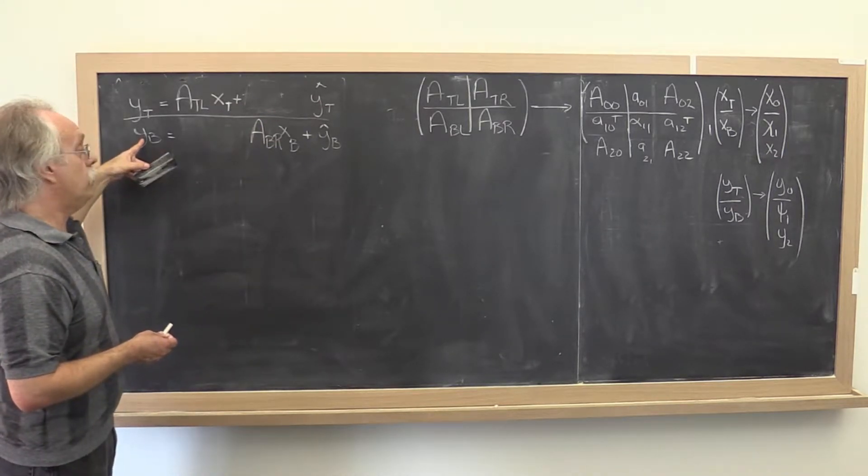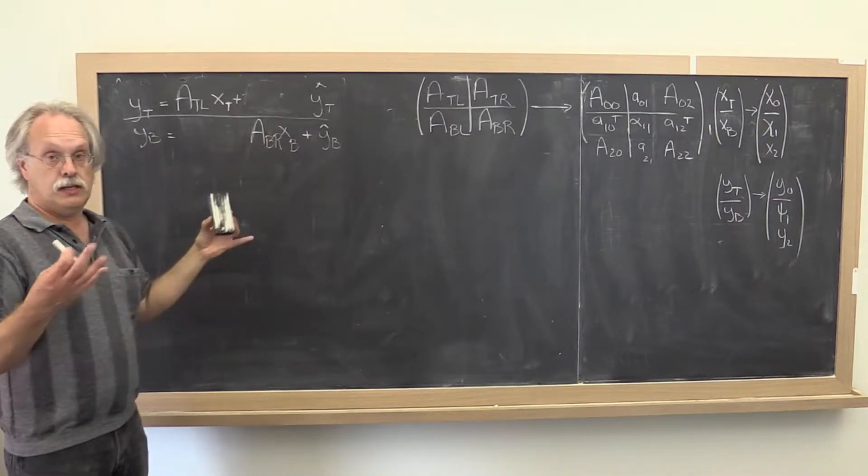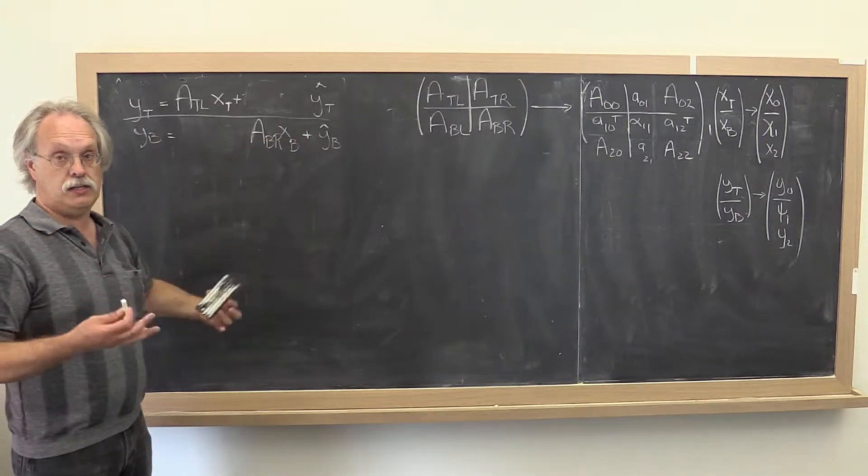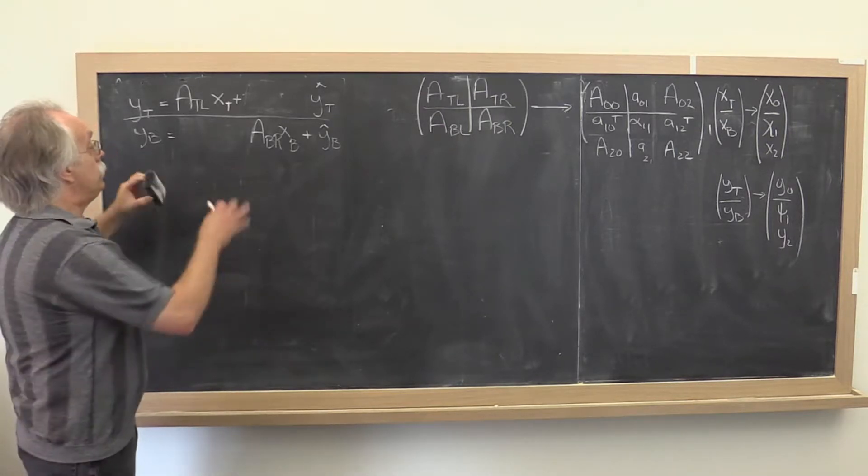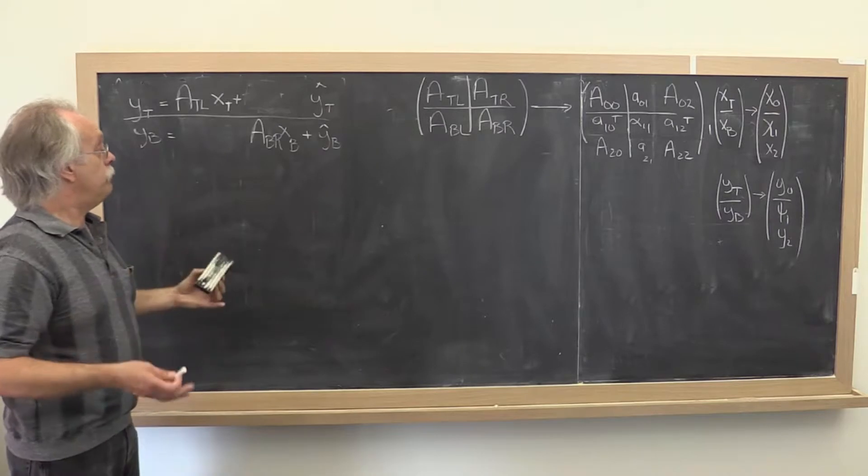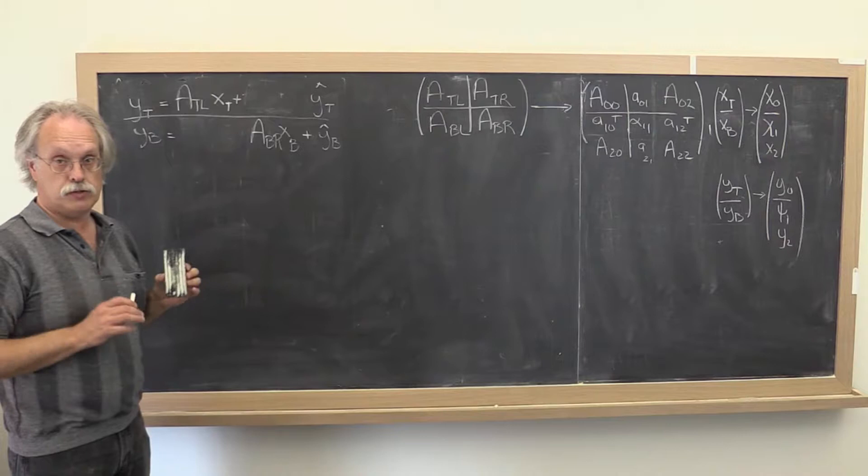And you've computed the final result. And notice that y_bottom would have no elements in it. And this would disappear for similar reasons. And everything is good. So far so good.